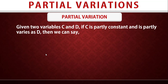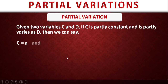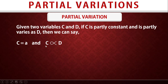To demonstrate this mathematically, given two variables C and D: if C is partly constant and partly varies as D, then we can say C equals A, where A is a constant representing the partly constant portion. For the second statement — C partly varies as D — that is a direct variation, meaning C is directly proportional to D. The combination of these two is what makes a partial variation. Whenever you see the word 'partly' in a question, that is a partial variation question.